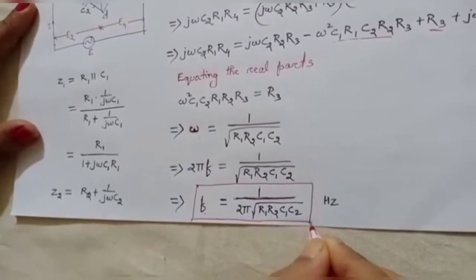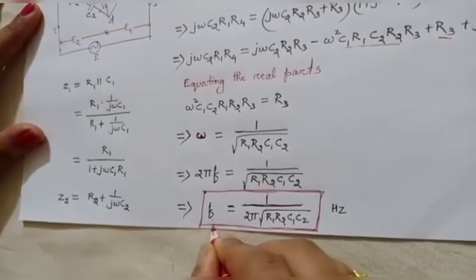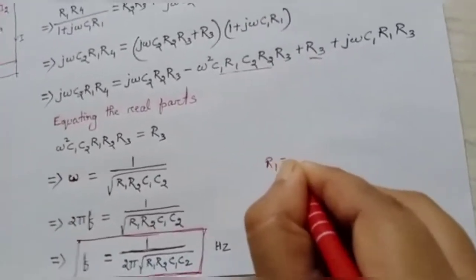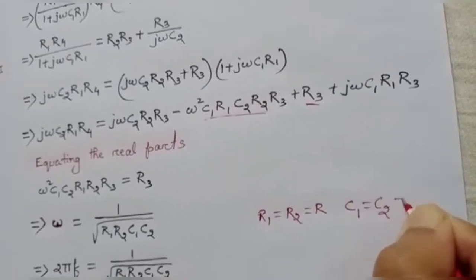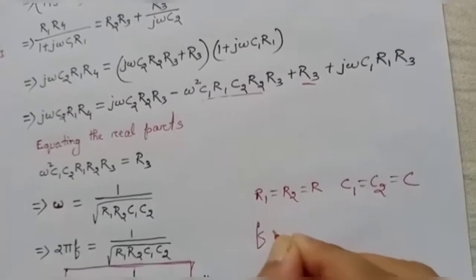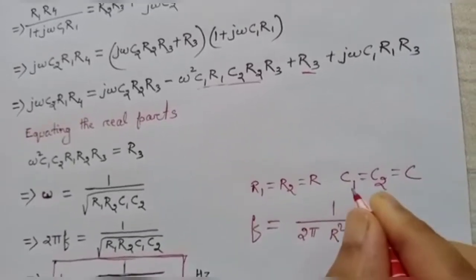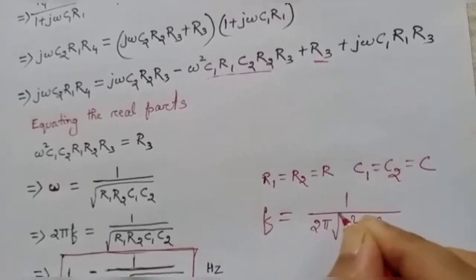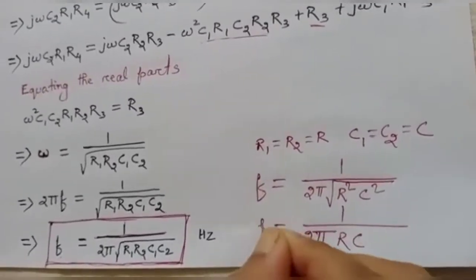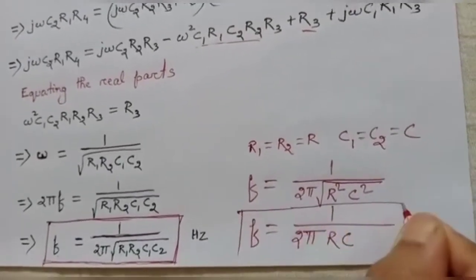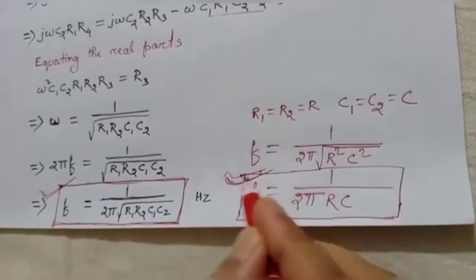Normally in all bridges, the parameters are chosen such that R1 = R2 = R and C1 = C2 = C. With this simplification, the frequency formula becomes f = 1 / (2π√(R²·C²)) = 1 / (2πRC). So we can find the unknown frequency using this simplified balance condition equation.